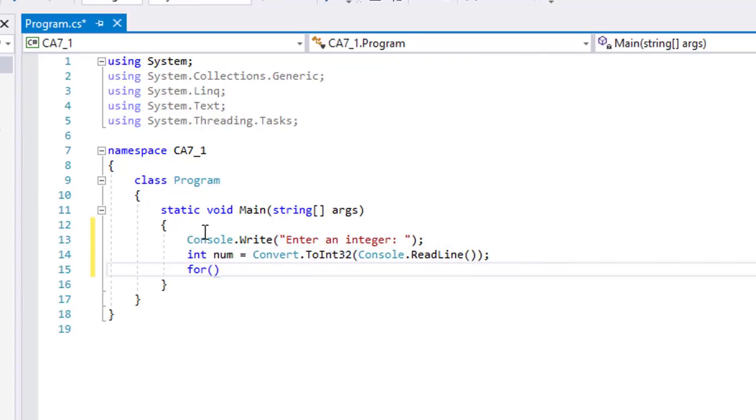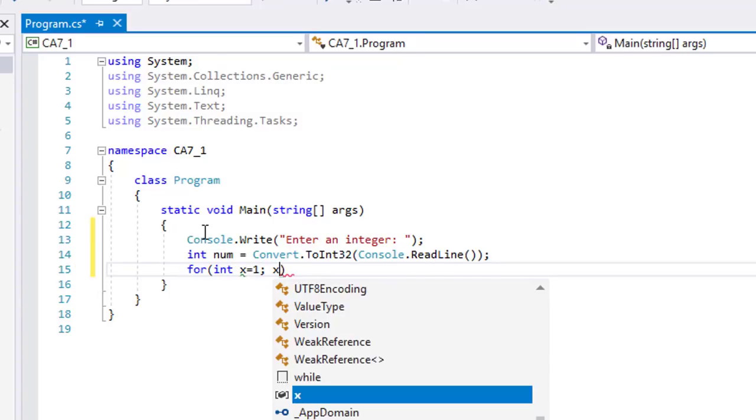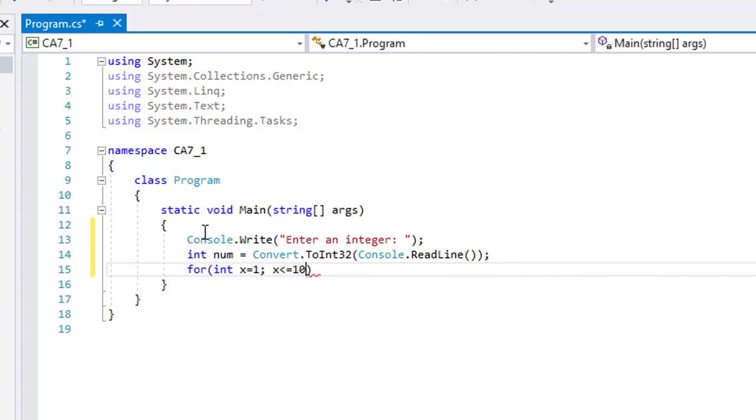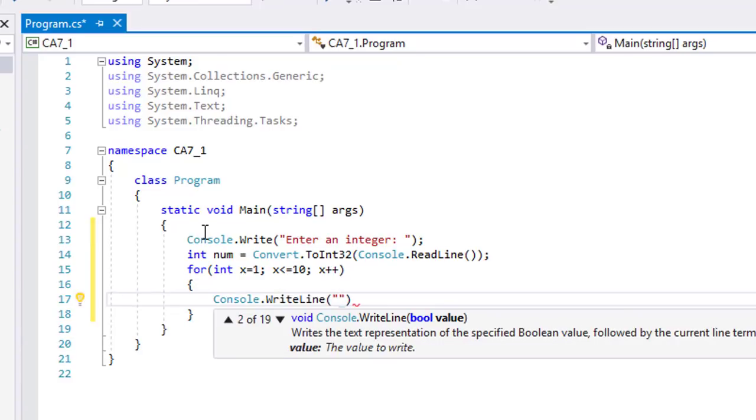Let's use a for statement with x as our counter that will start with one. We will continue looping while x is less than or equal to ten, and our increment for x will be by one. Now let's display the output.